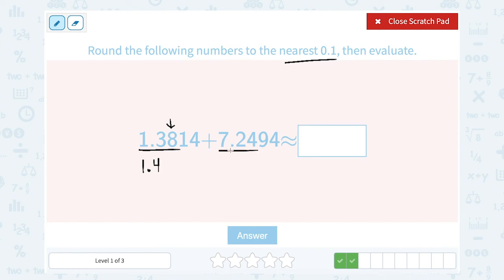For this one, it was 7.24. Well, 4 is smaller than 5, so that tells me to leave the 2 the way it is. So I'm going to round that to 7.2.